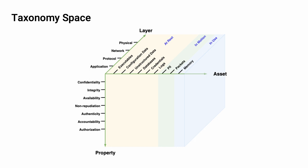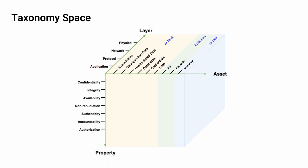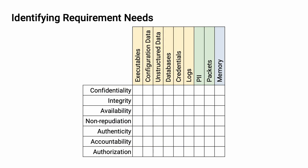Here's what the completed taxonomy space looks like. We've got cybersecurity properties on one axis, the assets on another, and the layers on the third. With the taxonomy space established, let's look at how we use it to identify requirement needs. We're going to look layer by layer and consider, for each combination of cybersecurity property and asset, whether we want to make assertions about that particular combination. The advantage of this decomposition is that we can both fully consider each asset class in the context of cybersecurity properties. Each of the four layers is typically worked on by a different specialized developer applying distinct controls.